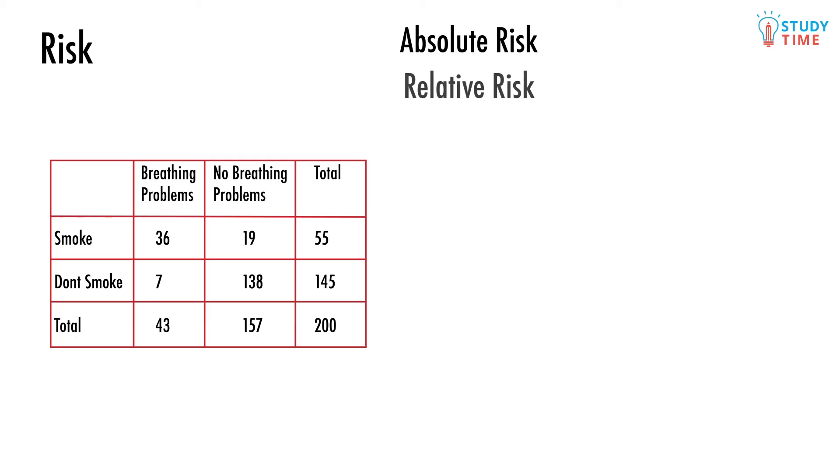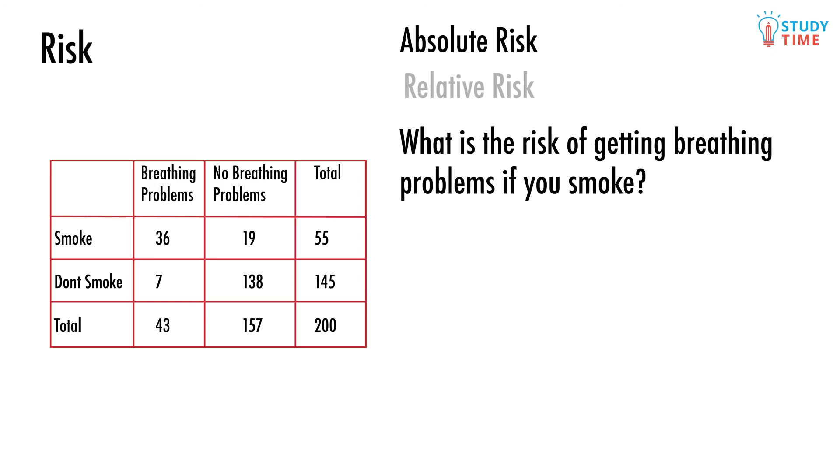An absolute risk problem for this might be: what is the risk of getting breathing problems if you smoke? All we need to do is take the number of people who have breathing problems and smoke and divide this by the total number of people who smoke. Risk equals 36 divided by 55 equals 0.65.